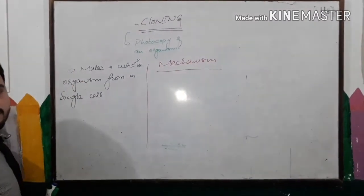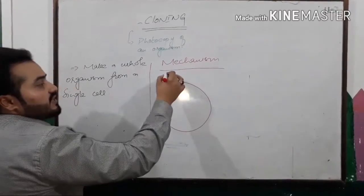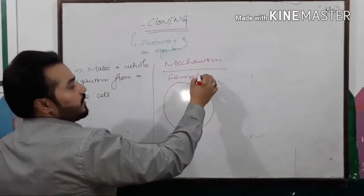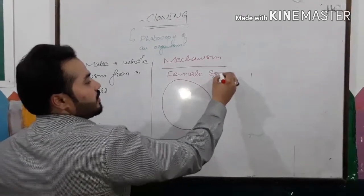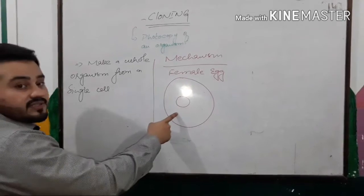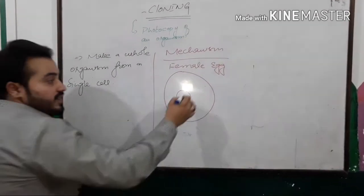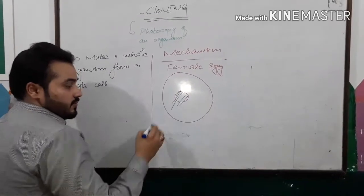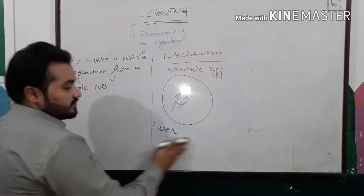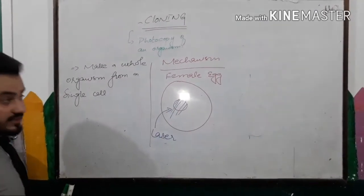It's a very simple concept. Take a fertilized female egg cell — here is the cell, here is the female nucleus, the egg. Destroy that nucleus with the help of laser light.